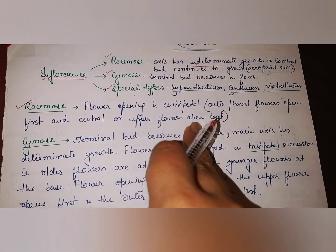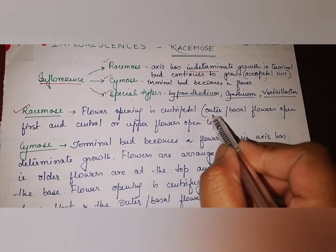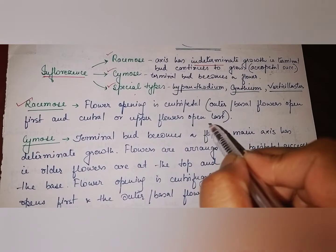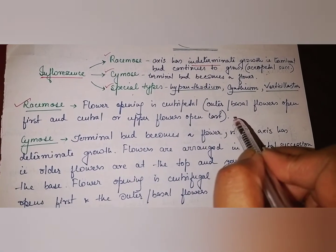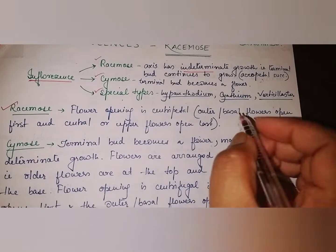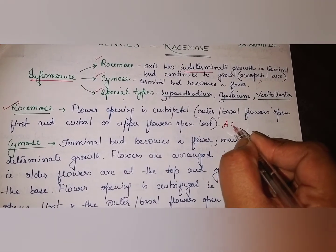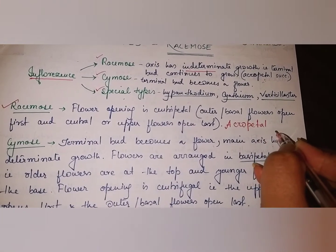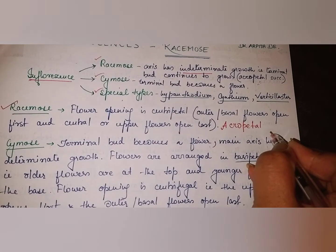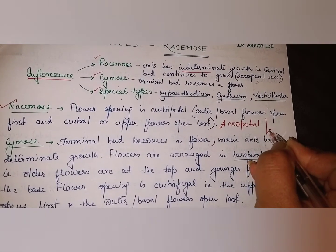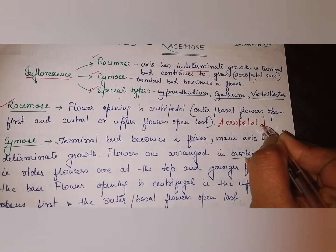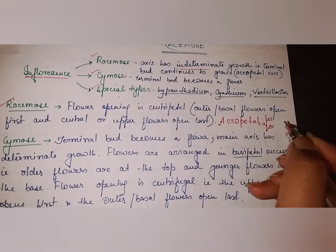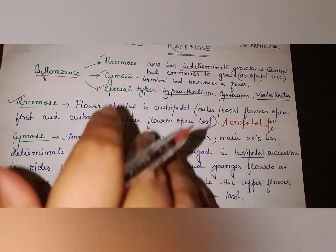In racimose inflorescence, flowers open in a centripetal fashion — the outer or basal flowers open first, and the central or upper flowers open last. Remember the term 'acropetal succession': from the base, the flower starts to open first, then the next one above it, then the next, like one, two, three — it goes on.